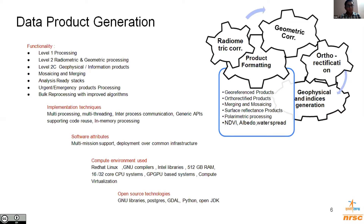For data product generation, we do Level 1 and Level 2 processing to generate radiometrically and geometrically corrected data products, along with a host of information and geophysical products such as NDVI, water layer, snow cover, and albedo. On-demand merging and mosaicking is also taken up on user requirement. The implementation techniques involve multi-processing, multi-threading, and in-memory processing. This software also works in a multi-mission environment supporting common use of infrastructure. The compute environment involves multi-core CPUs with RAM up to 512 GB, CPU cores of up to 32, GPGPU-based systems, and compute virtualization technologies.